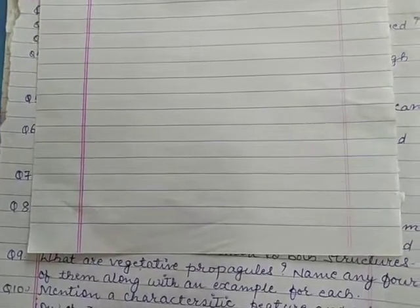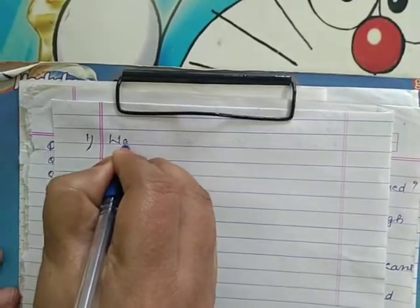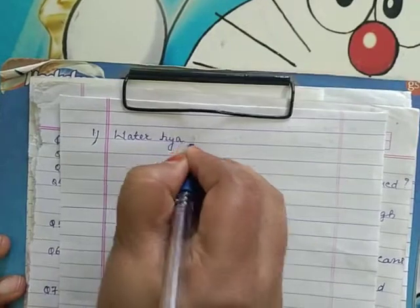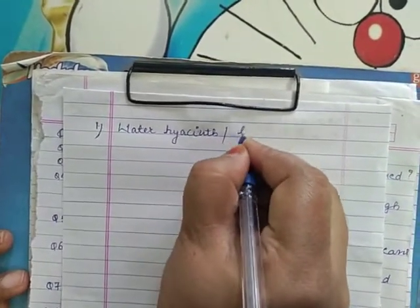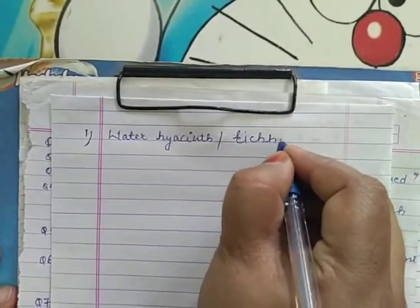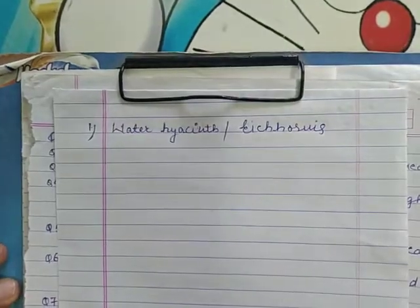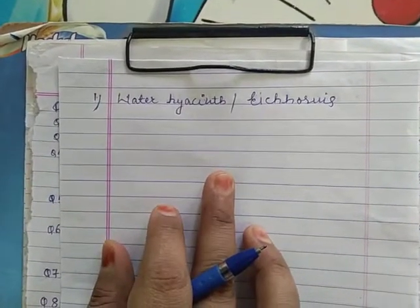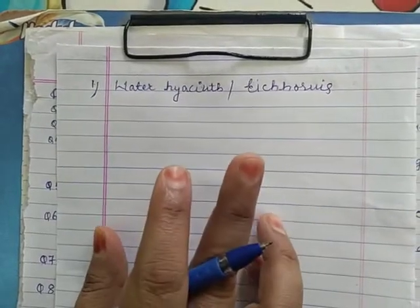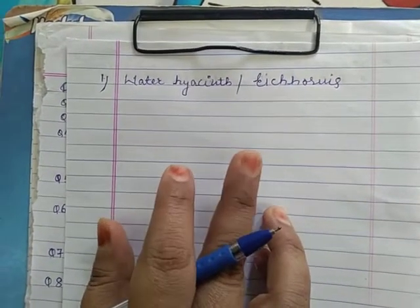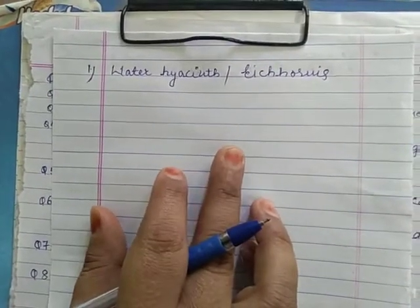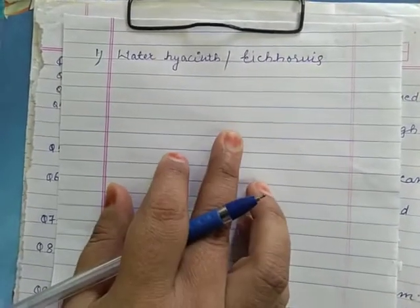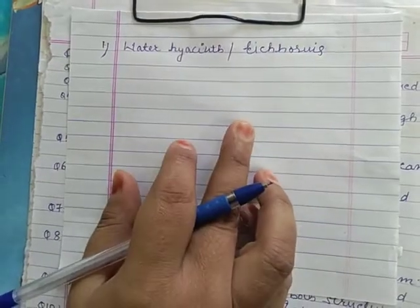Now we will discuss some interesting facts about vegetative propagation. The first fact involves an aquatic plant — water hyacinth. This plant was introduced in India because of its beautiful flowers and beautiful shape of leaves. But because of its rapid vegetative propagation, it has spread very aggressively in freshwater bodies and is very difficult to control.